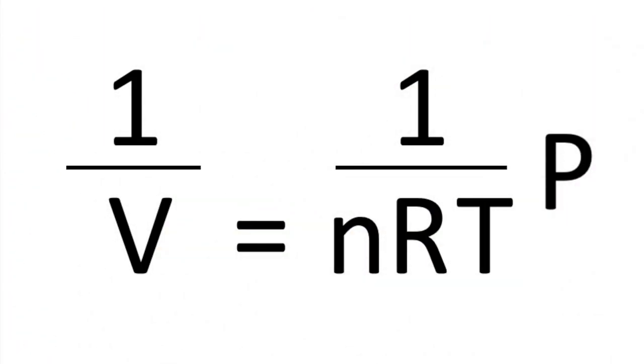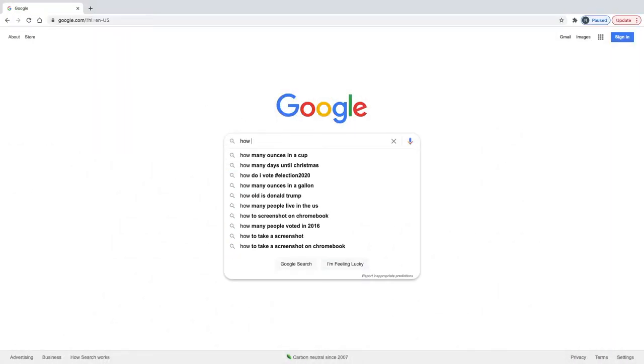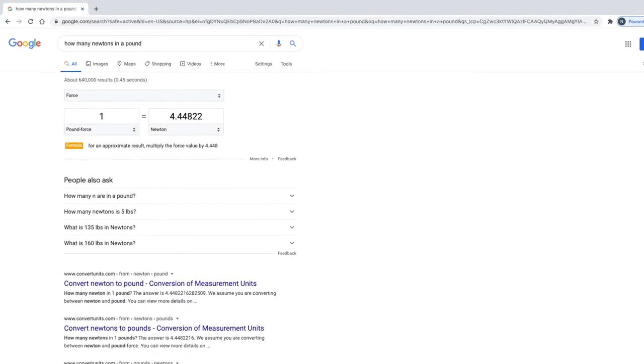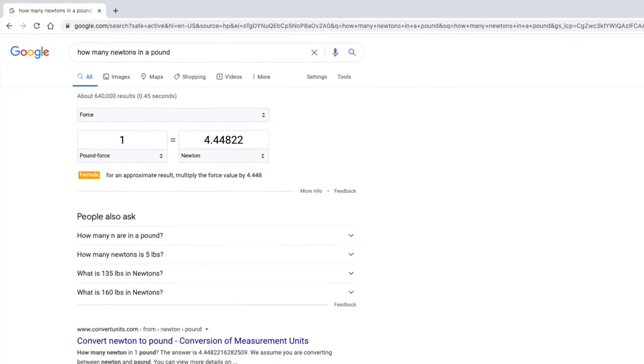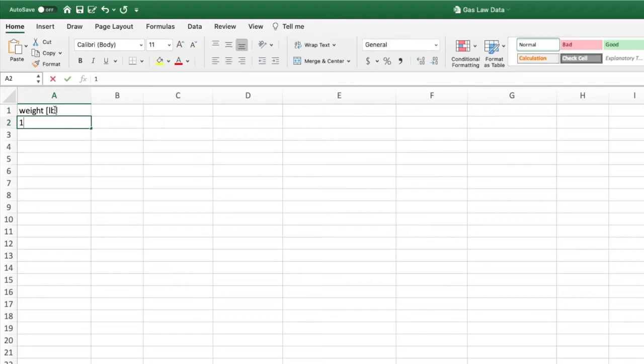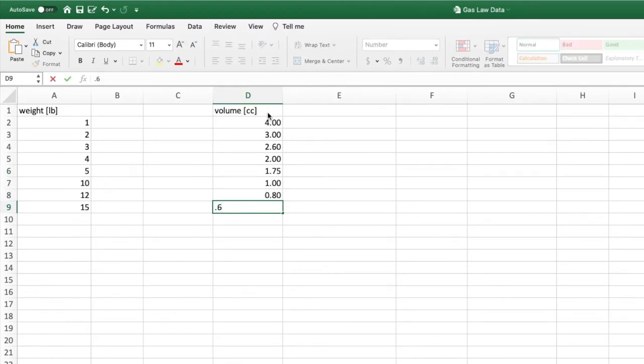The next step is to get from the raw data that you just took to a graph of 1 over volume versus pressure. We also suggest that you convert everything into SI units. You can easily find any conversion online. In a spreadsheet, record the weights used in one column and the corresponding volumes in another. Also record the cross-sectional area and additional dead volume in the syringe. Make sure you've converted your cross-sectional area to meters squared.